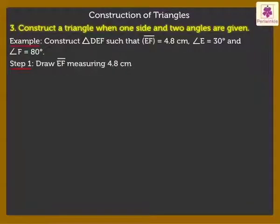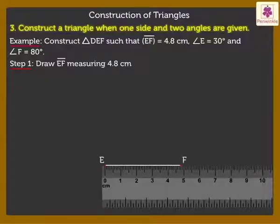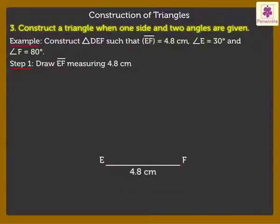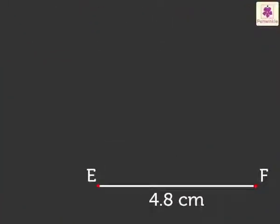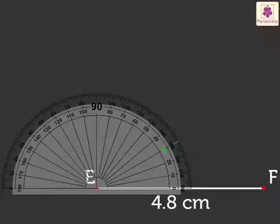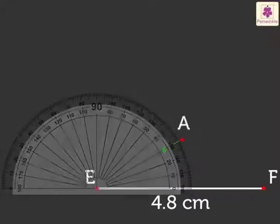Step 1. Draw Segment EF measuring 4.8 cm. Step 2. Construct Angle AEF of 30 degrees using a protractor.